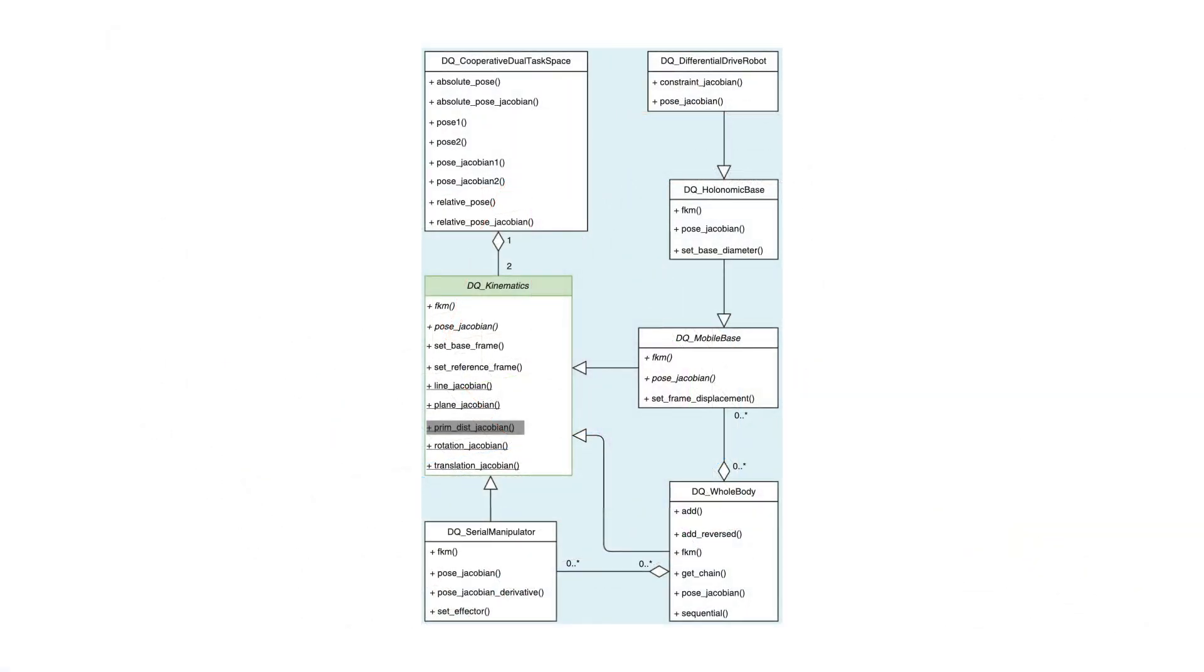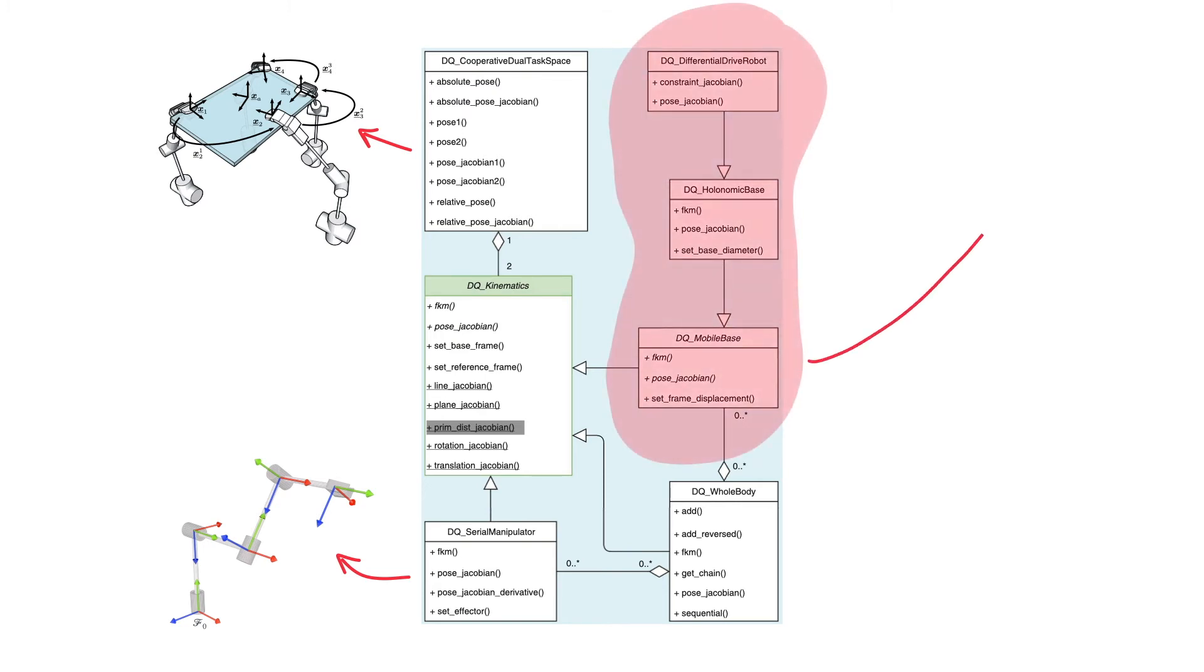But, of course, our main interest is in robot modeling and control. Diki Robotics has classes to easily model serial manipulators, some parallel kinematic chains, especially those associated with cooperative manipulation, mobile bases, including non-holonomic ones, and mobile manipulators.